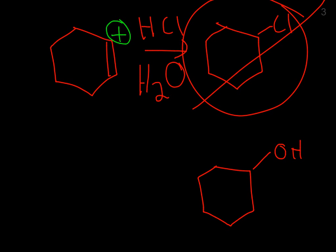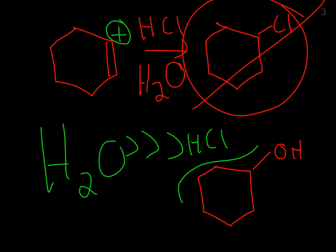You formed a carbocation, and just statistically speaking, there's much more H2O than there is HCl, or I guess Cl. So the water attacks the carbocation in place of the Cl anion, and you get this cyclohexanol product.